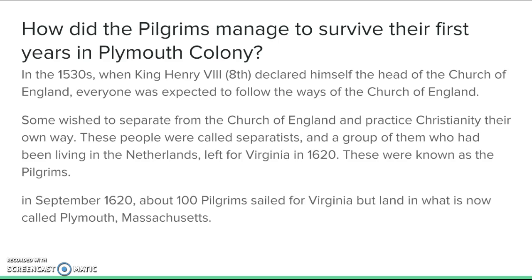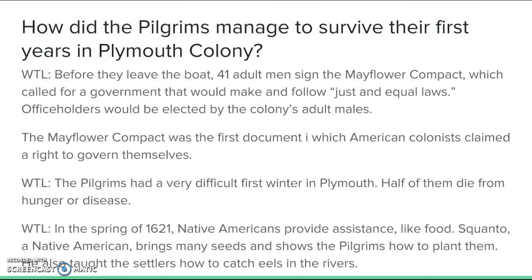They decided to get a fresh start and leave for Virginia. They set sail in September 1620, with about 100 people on their ship called the Mayflower. We call these people pilgrims because a pilgrim is a person who takes a religious journey, and they were leaving for religious reasons. They intended for Virginia but landed at a place now called Plymouth, Massachusetts. Seeing this as an opportunity to make their own rules outside the King's territory, 41 adult men signed the Mayflower Compact — a document calling for a government that would make just and equal laws, with officeholders elected by the colony's adult males. It was the first document in which American colonists claimed a right to govern themselves.